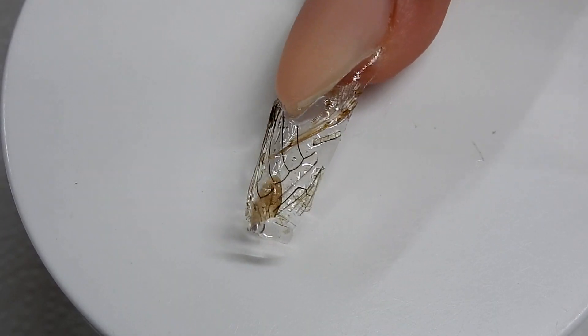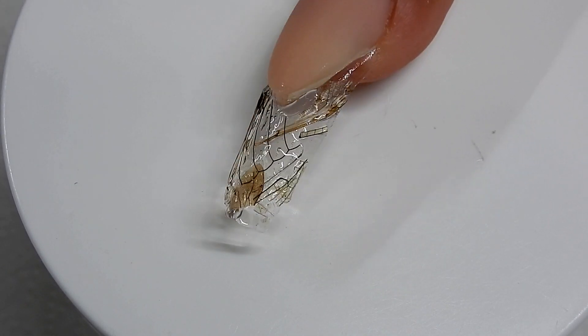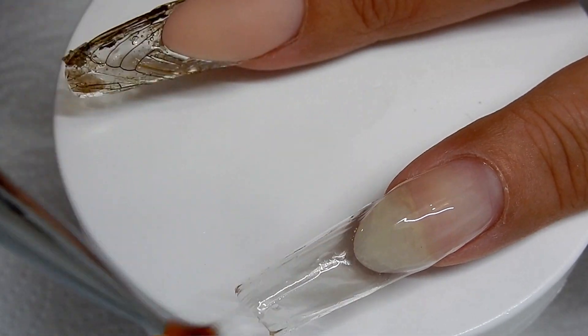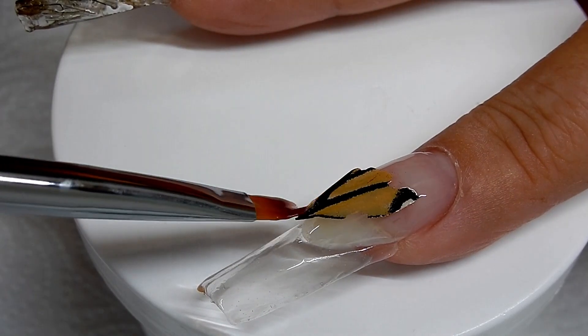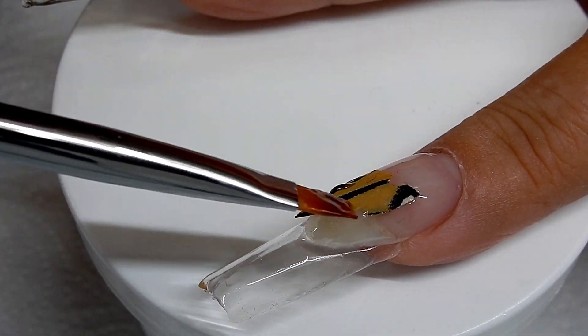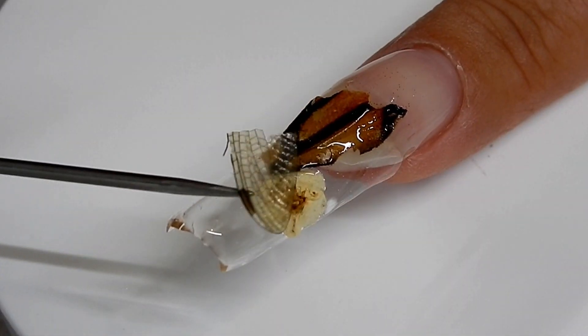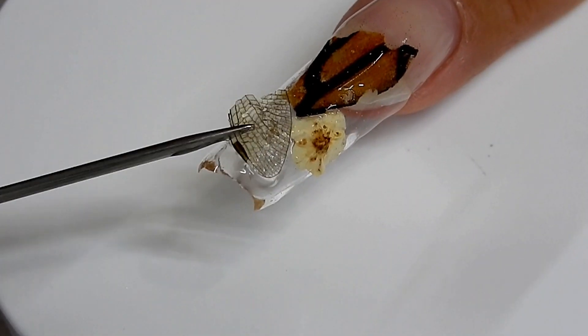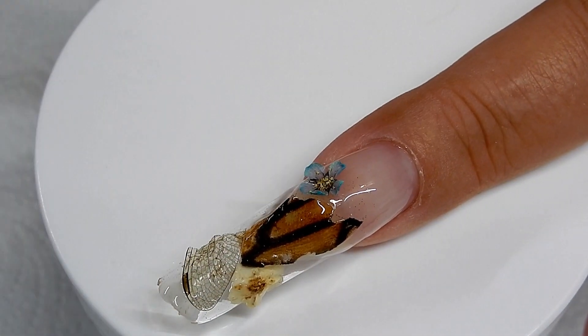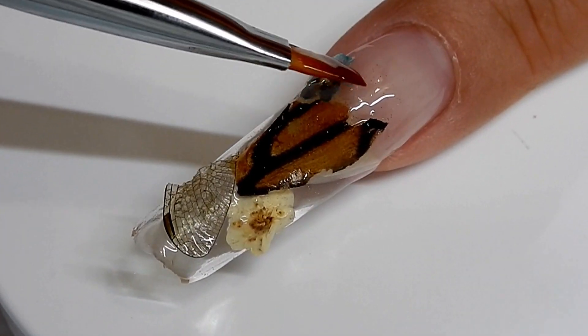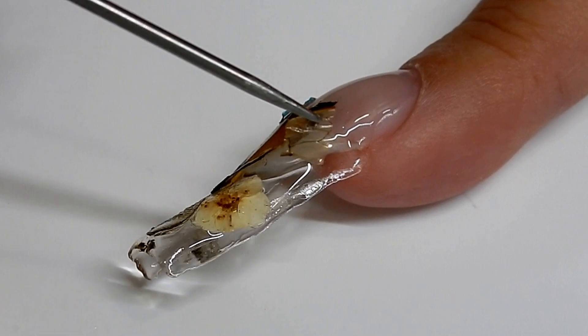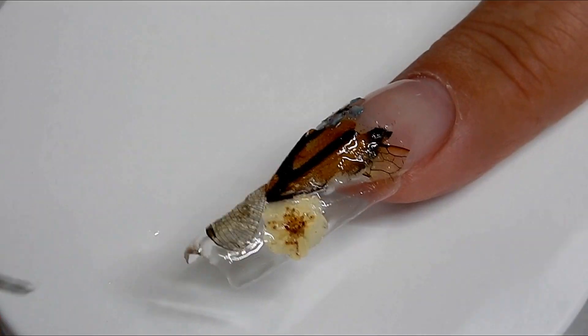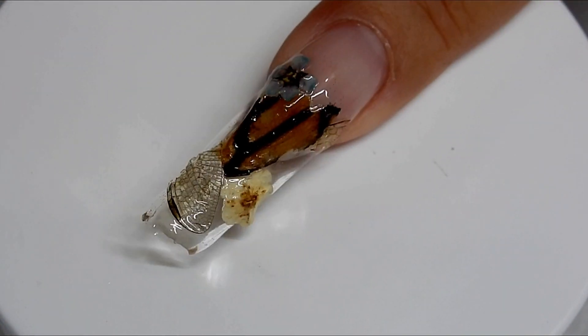When you are pleased with it and you think you got your wings where you want, go ahead and cure those into place and start tapping it in. You just keep adding little pieces until you're satisfied. Go ahead and cure that.